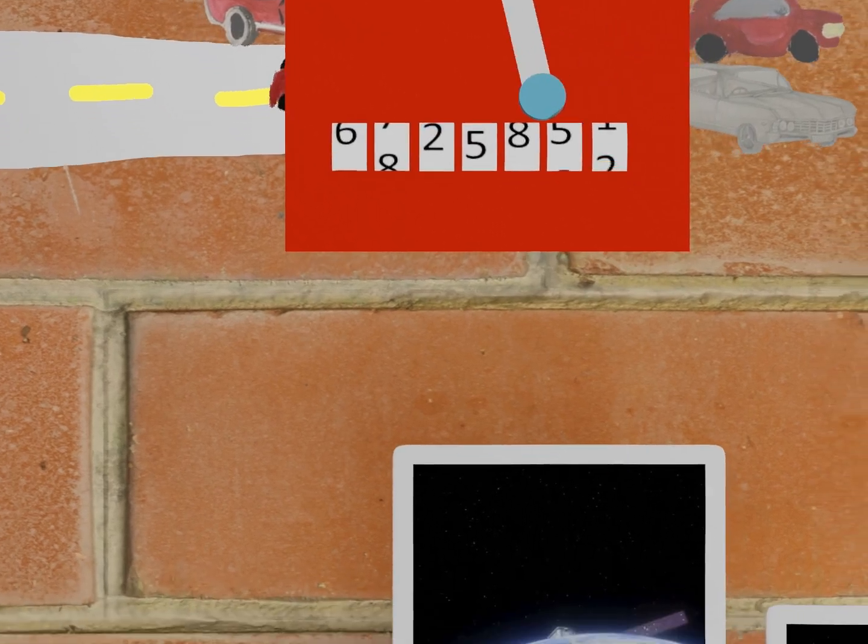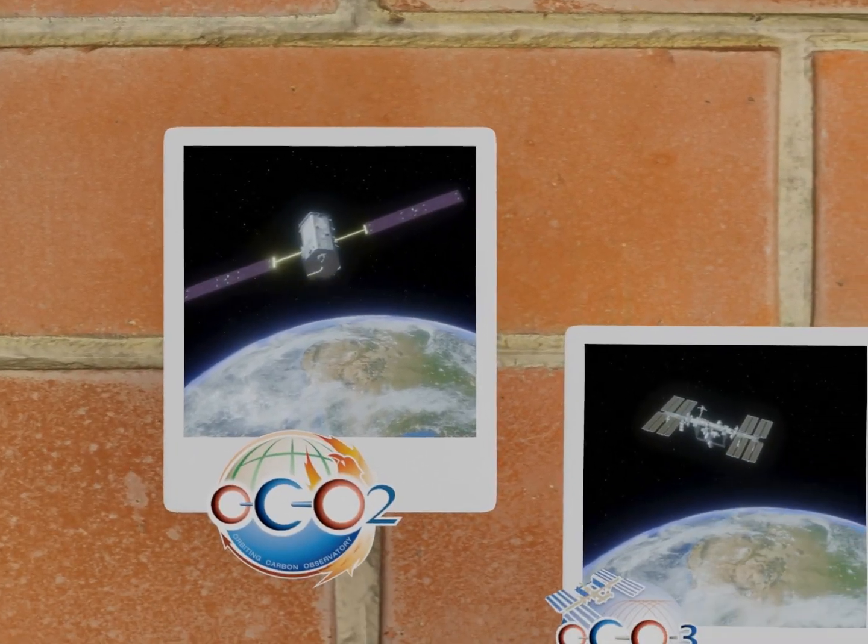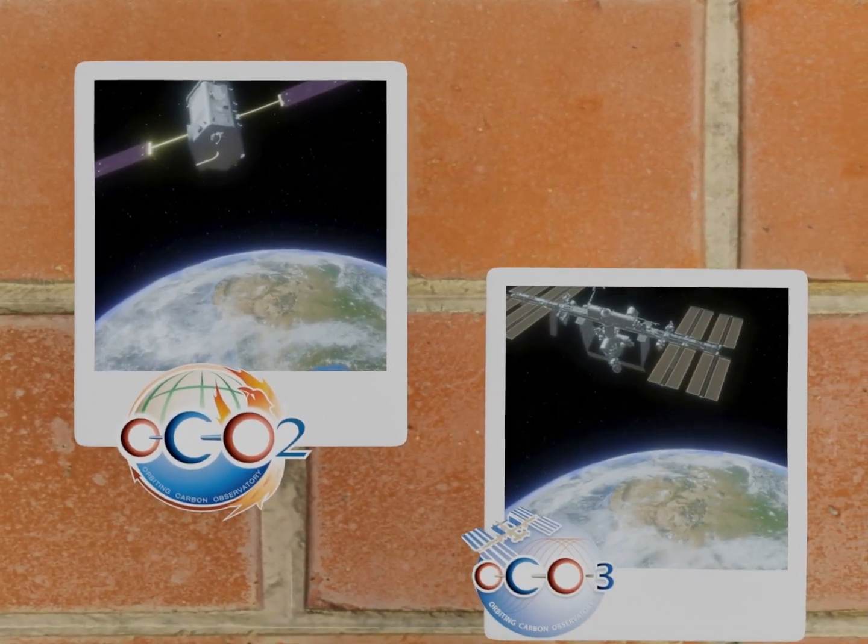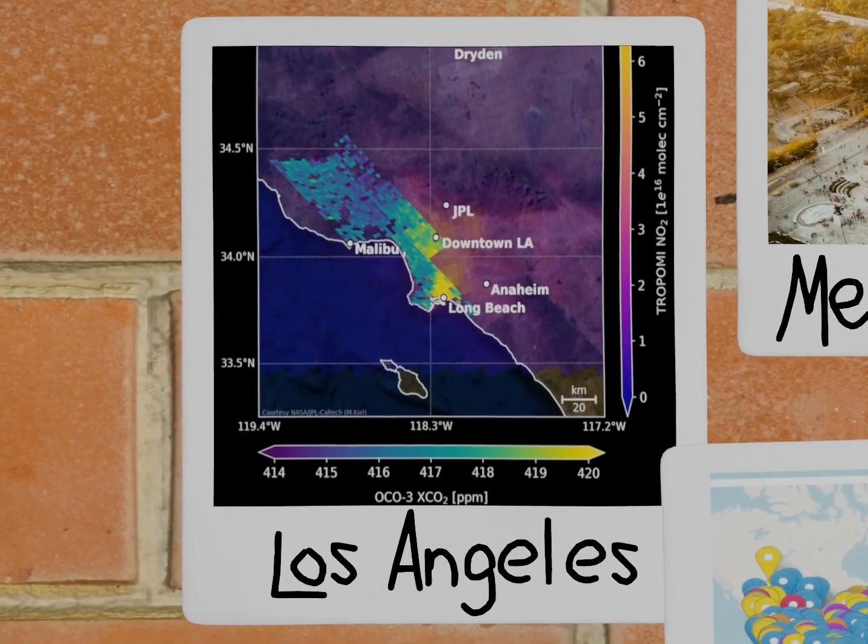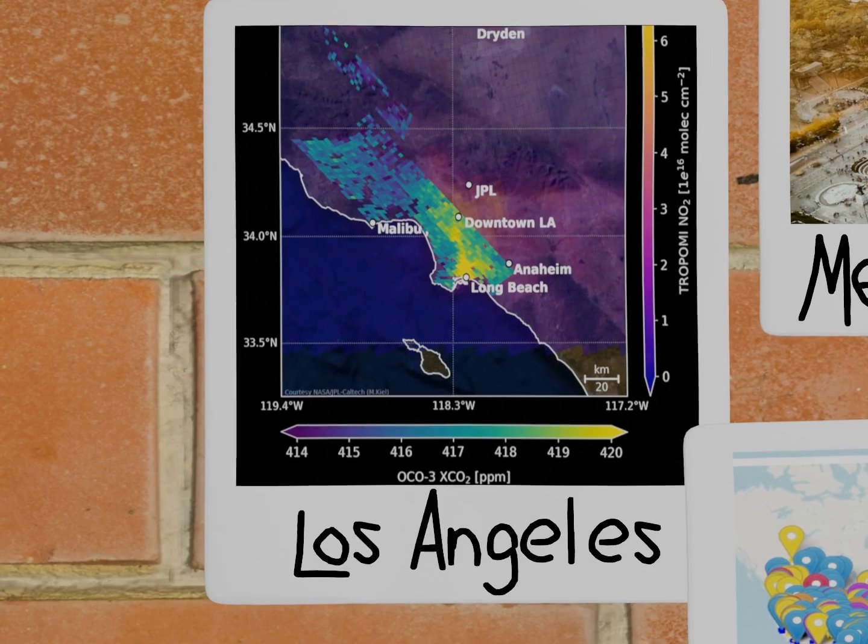So NASA is working on another way to do it from space. Here are NASA's Orbiting Carbon Observatories, or OCOs, launched to make carbon dioxide maps of our planet.